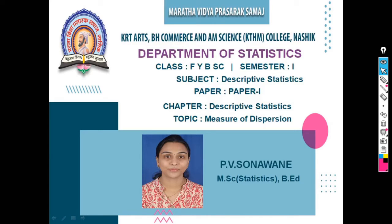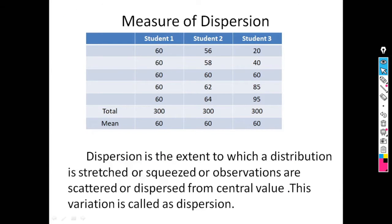Hello everyone, this is our next lecture on the chapter descriptive statistics and our topic is measure of dispersion. In last lecture, we saw the definition of dispersion: dispersion is the extent to which a distribution is stretched or squeezed, or observations are scattered or disparate from the central value. This variation is called dispersion.